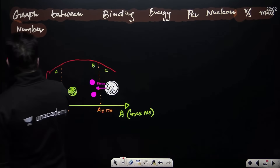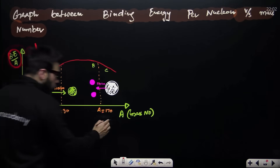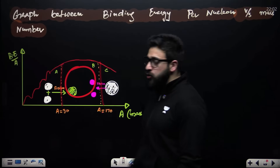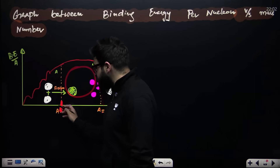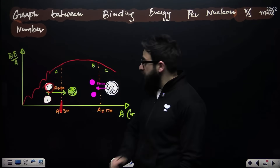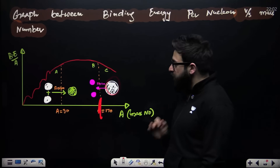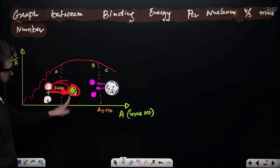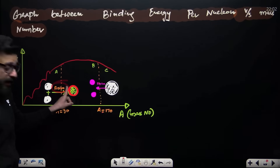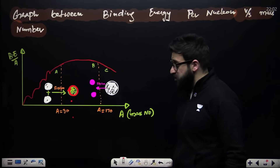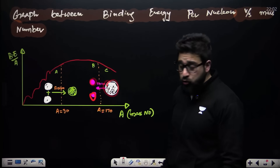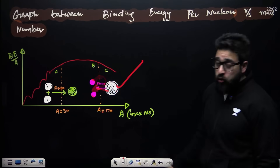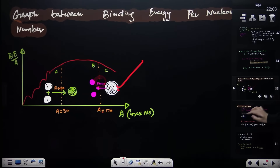The graph of binding energy per nucleon versus mass number shows that nuclei with mass number 30 to 170 are highly stable. Nuclei with mass number less than 30 are less stable — two nuclei can fuse together (fusion) to form a bigger, more stable nucleus, releasing energy. Nuclei with mass number greater than 170 are also unstable — a large nucleus can break into two smaller nuclei; this process is called fission, and the nucleus attains greater stability.